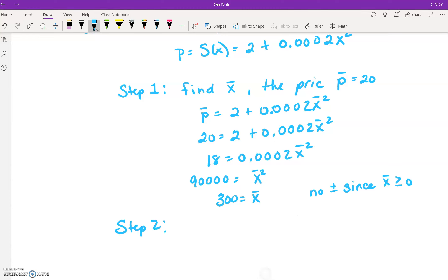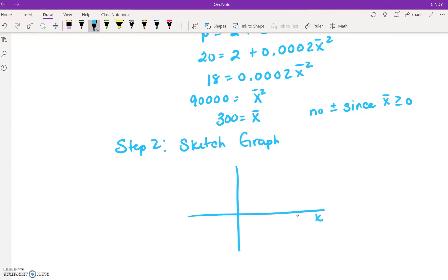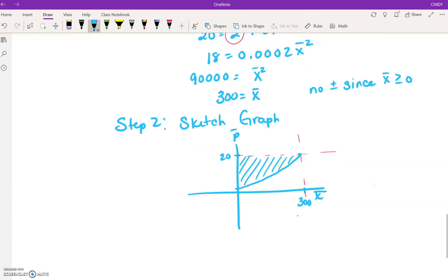Step two, we're going to sketch the graph. Again, we have x̄ side and the p̄ side. We have a price point of 20 at a surplus level of 300. We're going to kind of draw a line for both of those, and you also know that it's going to cross the p axis at 2, which is way down here. This is a curve that's going to curve up like this, and you're looking for the area in here.